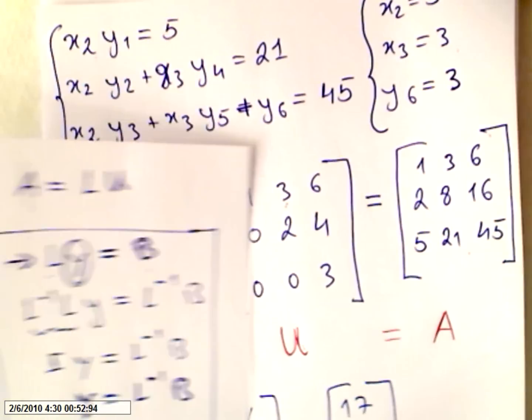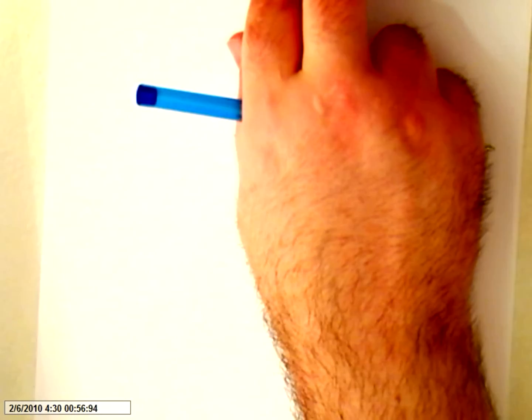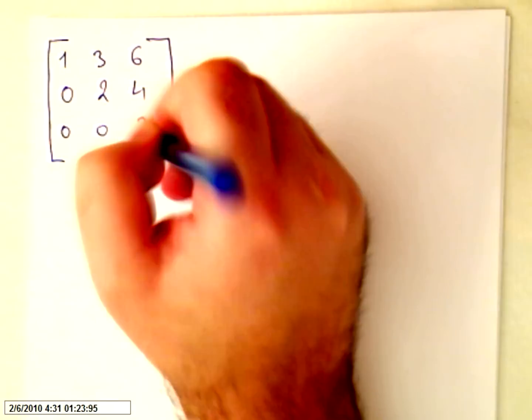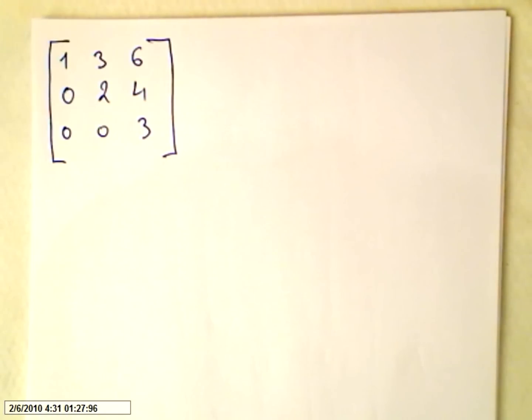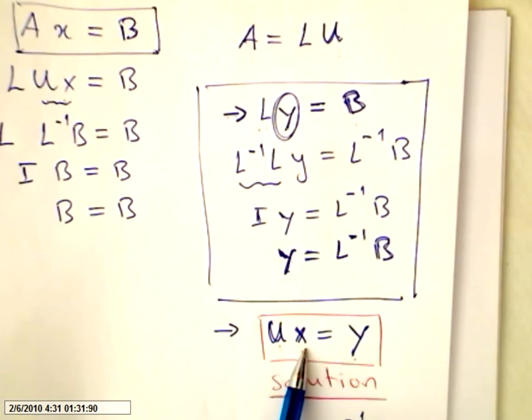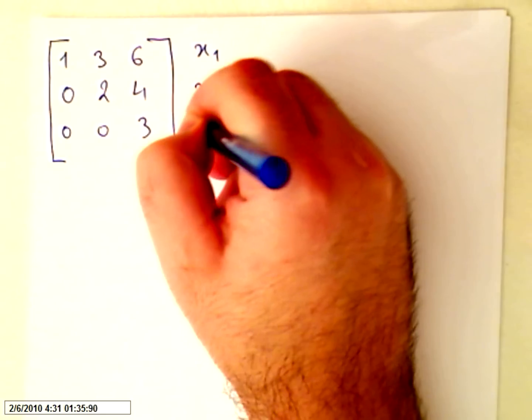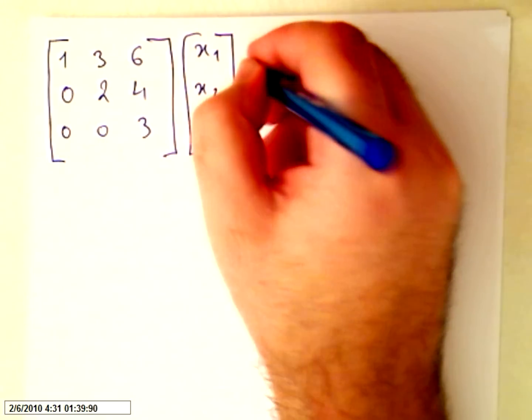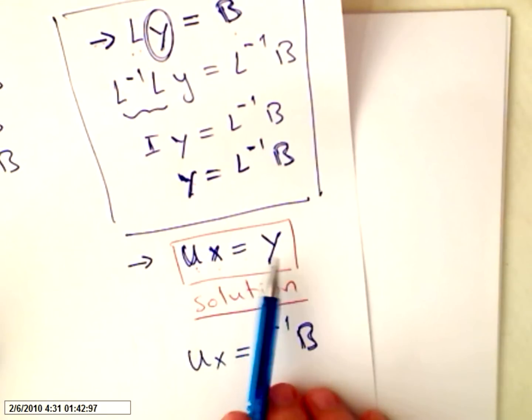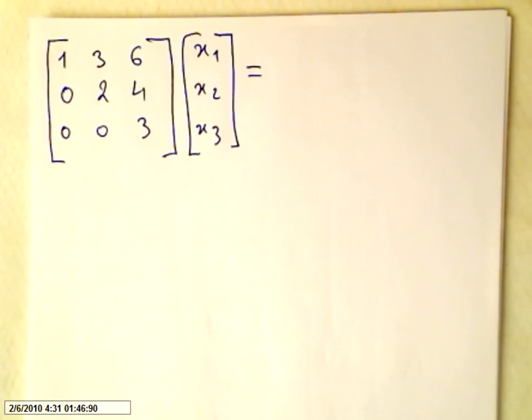I'm going to rewrite all this. Our upper matrix was 1, 3, 6, 0, 2, 4, 0, 0, 3. And now we have X1, X2, X3 equal Y.